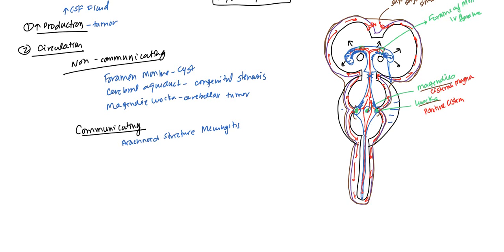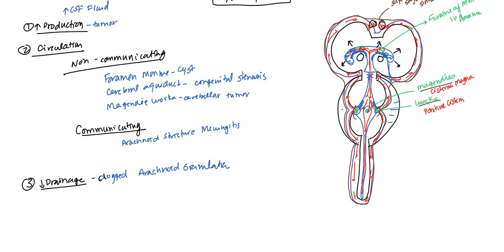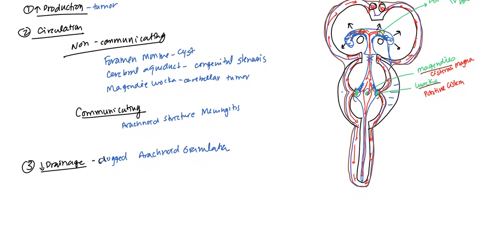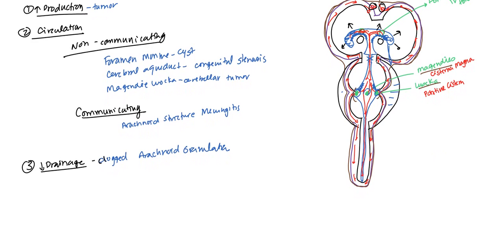The final cause is decreased drainage. Decreased drainage focuses on the arachnoid villi — these are granulations — and they can just become clogged. Clogged arachnoid granulations will not allow the fluid to eventually drain into the superior sagittal sinus, which is necessary for it to return to the venous blood. So these are the main causes of hydrocephalus.